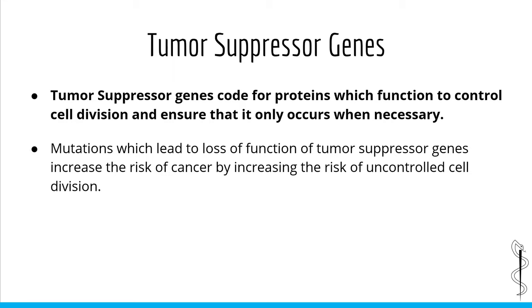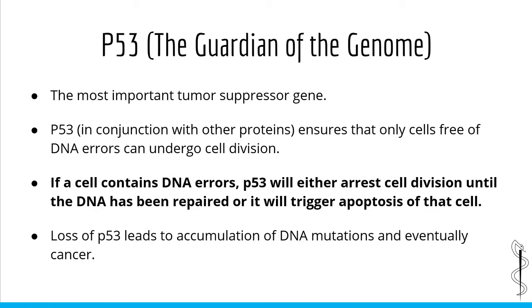This is an excellent time to introduce tumor suppressor genes. Tumor suppressor genes code for proteins which function to control cell division and ensure that it only occurs when necessary. Mutations which lead to loss of function of tumor suppressor genes increase the risk of cancer by increasing the risk of uncontrolled cell division. In essence, tumor suppressor genes code for proteins which ensure that cells do not divide out of control, and only when required.